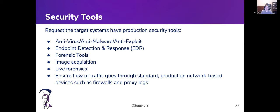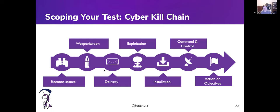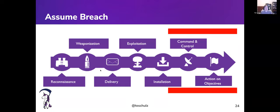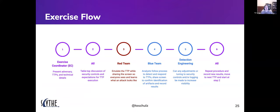For scoping tests, we always recommend an assume-breach model — focusing on the later stages of the Cyber Kill Chain: command and control and actions on objectives. That's where ransomware has the most impact and where you have the most control, since it's all within your environment. A full defense-in-depth posture will require testing more stages, but that's our focus here.